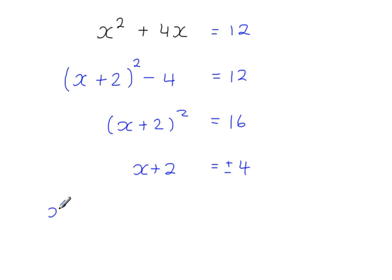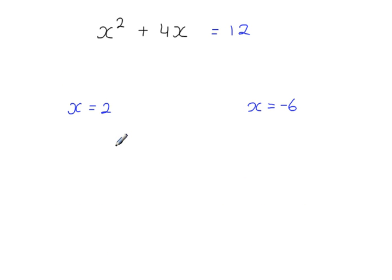So then you've got x plus 2 is equal to 4 and you've got x plus 2 is equal to minus 4. So from this one here we have x is equal to 2, and x is equal to minus 6. And these are solutions to this equation. So if I substitute x equals 2 into this equation, it should give me 12. Let's test this.